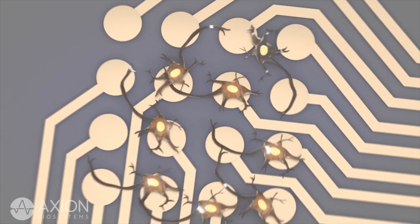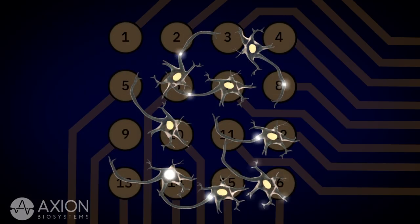Spikes are simultaneously detected from multiple electrodes across the array, making it ideal to monitor activity throughout the culture and investigate network behavior.